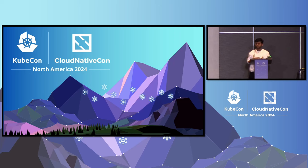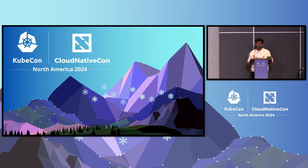And this is where Storage Version Migrator comes in. You would migrate all the resources that were created using V1Beta1 to V1Beta2, and then deprecate your V1Beta1 version. That's the quick summary of what Storage Version Migrator does. The controller of SVM essentially does the job of the migration, and this controller is part of Kube Controller Manager.